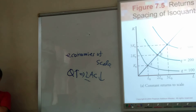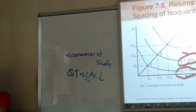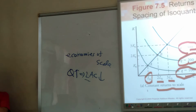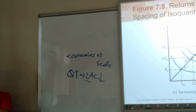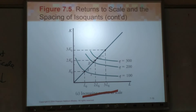Here is an example about return to scale and the spacing of isoquants. You have production levels at 100, 200, 300. With 1L, 2L, 3L — double input, double production — this is constant returns to scale. Decreasing returns to scale: you double input and get less than double. Increasing returns to scale: you get more than double out of it.